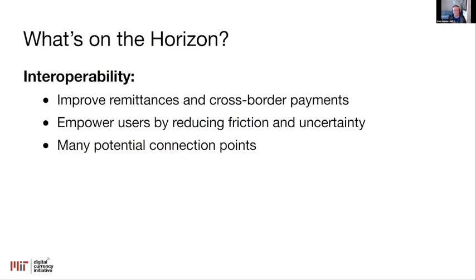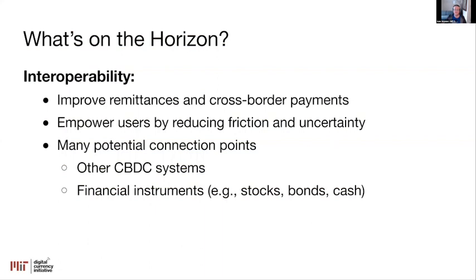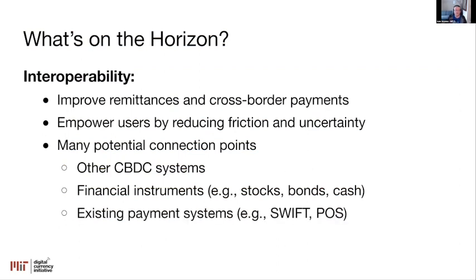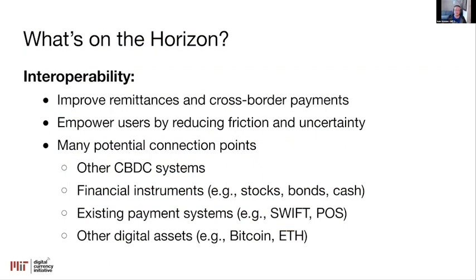Interoperability means many different things. You might imagine this is between CBDCs — like digital euros and digital yuan. You could also mean connecting a CBDC to current financial instruments like stocks, bonds, or ATMs, or how it might connect with other payment systems like SWIFT or point-of-sale. And of course, on the bleeding edge, how it might interact with other digital assets — like bridges to Ethereum or atomic swaps. Our current plans for interoperability have focused on starting simple: if we have two people who are holders of different CBDCs, how can we build a method for them to atomically swap their currencies without necessarily going through an intermediary? That work is coming up on the horizon, and we do have a breakout session on it.